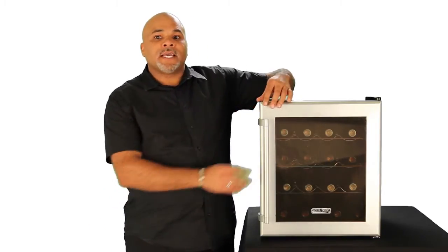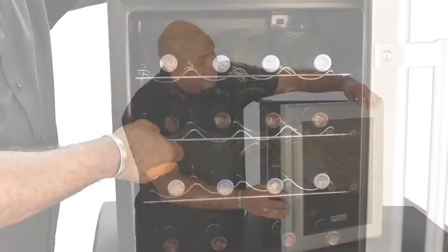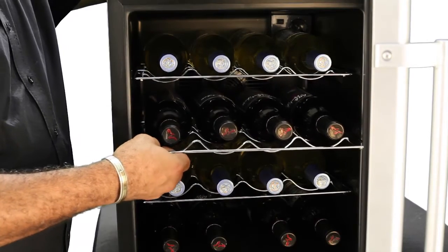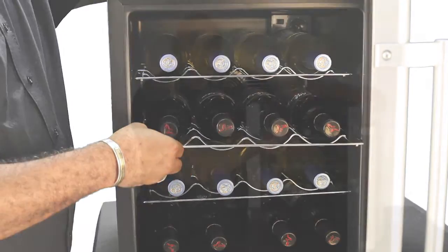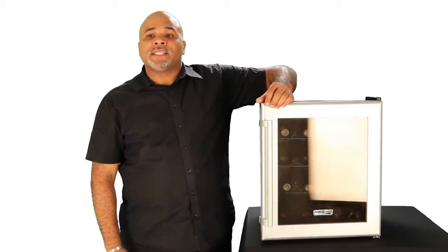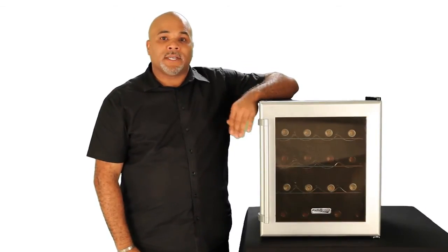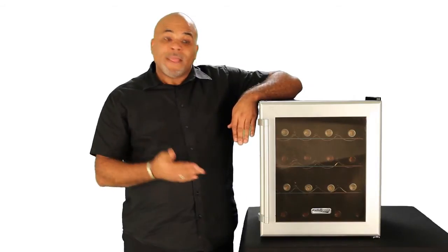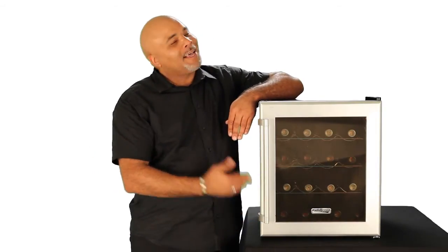Another thing this unit features is three scalloped shelves that easily slide out as you can see here, and it has a temperature range of 48 to 64 degrees which makes it perfect for storing either whites or reds, or as you can see, like I like to do, both.